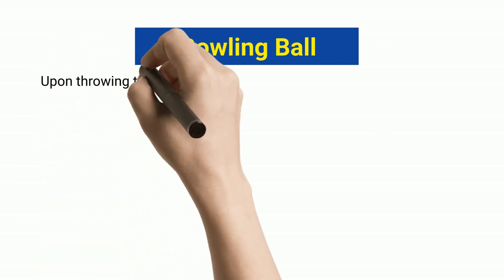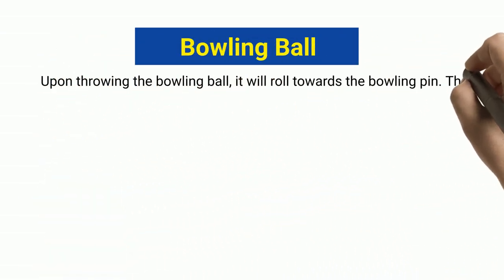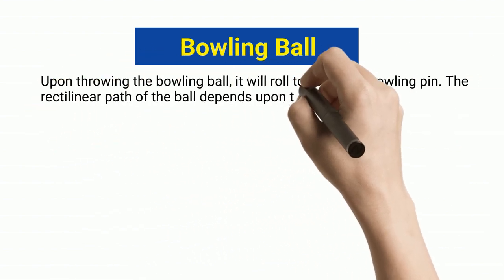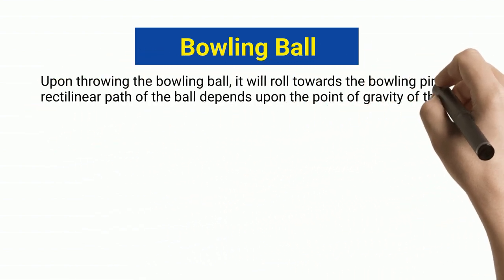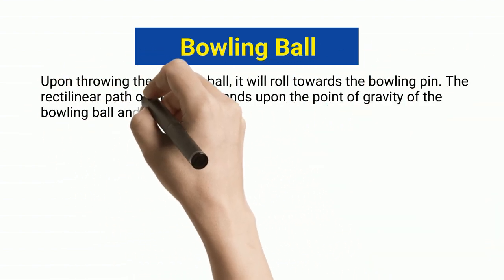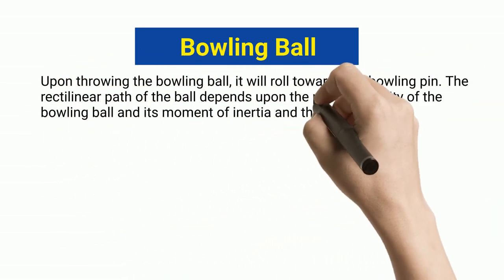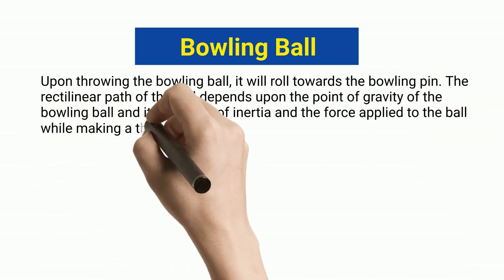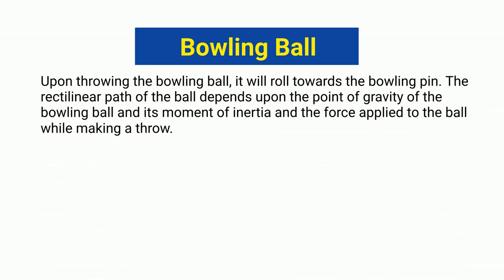Bowling ball. Upon throwing the bowling ball, it will roll towards the bowling pin. The rectilinear path of the ball depends upon the center of gravity of the bowling ball, its moment of inertia, and the force applied to the ball while making a throw.